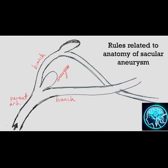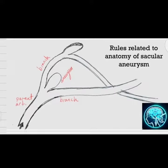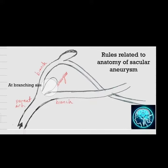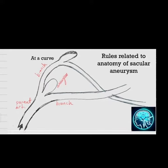Hi, everyone, and thank you for your interest. Professor Roton introduced three rules related to the anatomy of saccular aneurysms that should be considered when planning the operative approach to these lesions. These aneurysms arise at a branching site on the parent artery, or at a turn or curve in the artery.